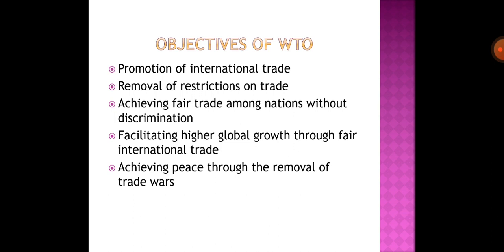The third objective is Achieving Fair Trade Among Nations Without Discrimination. There should be no discrimination in international trade. For example, if one country has an advantage to export but is not able to, that is discrimination. So there should be no discrimination in the distribution of goods and services.